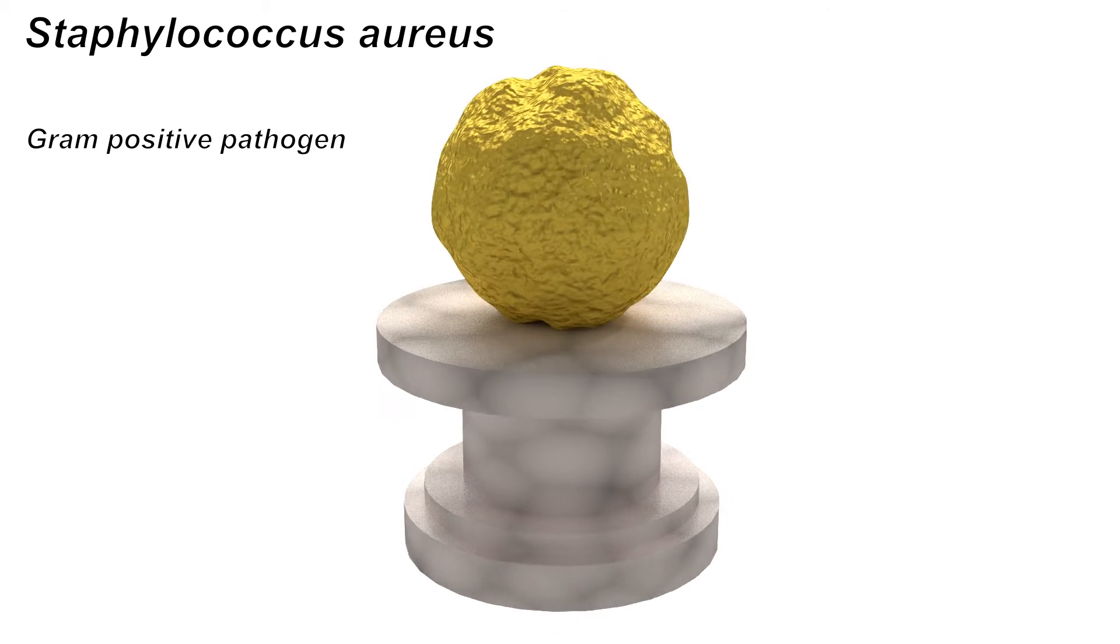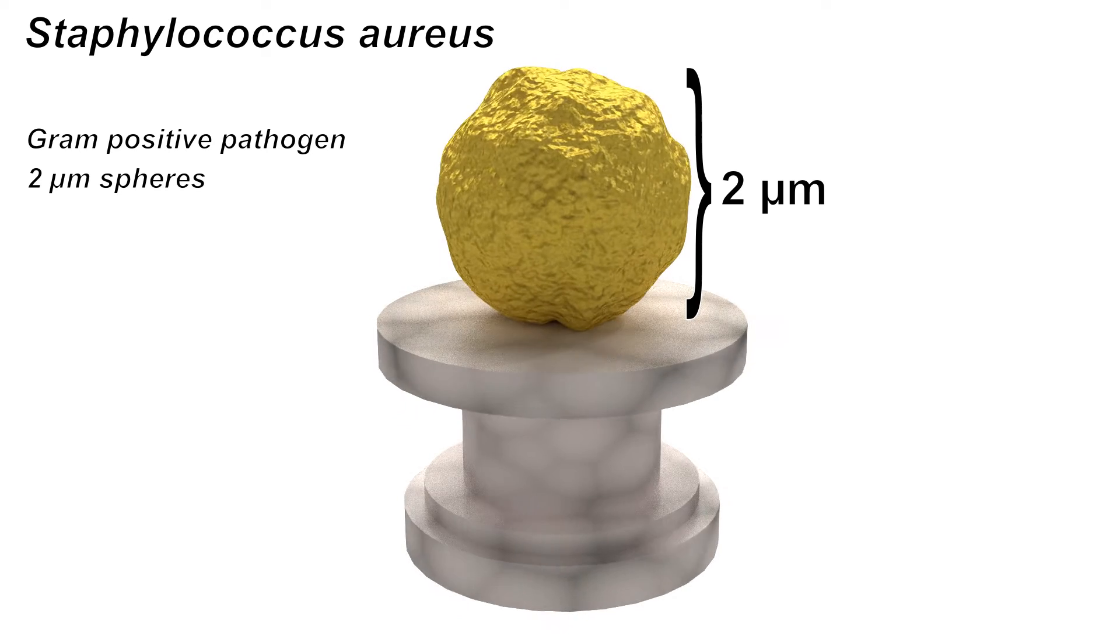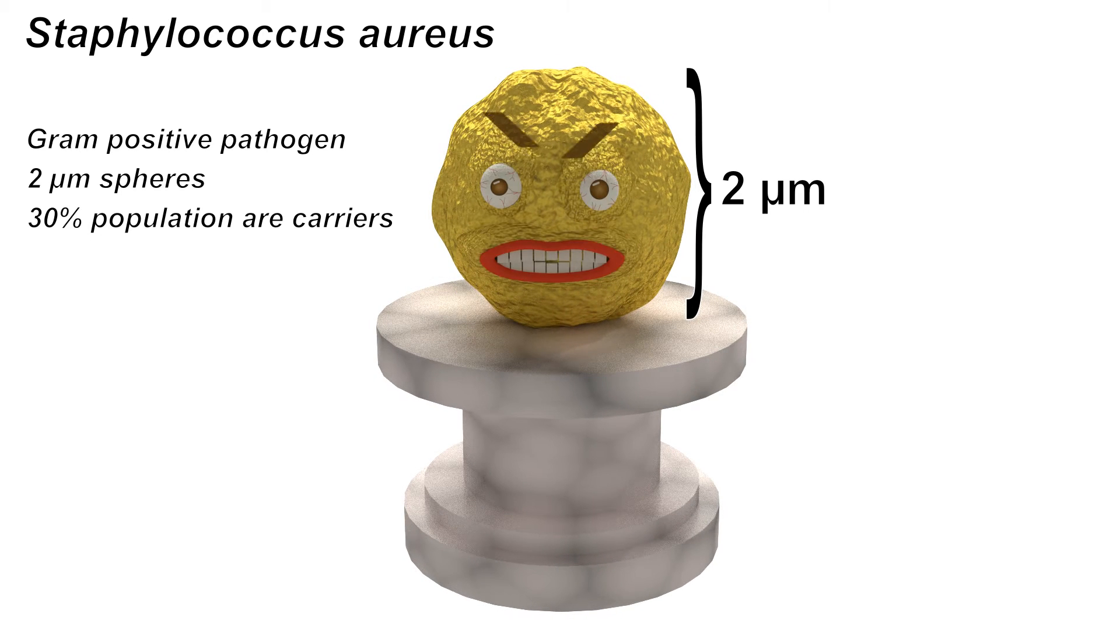Staphylococcus aureus is a gram-positive bacterium that is about 2 micrometers in size and can be found on the skin of about 30% of the population.